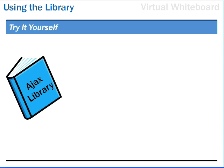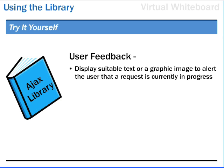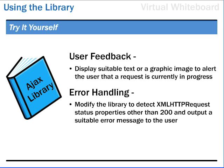The current library might be improved in a number of ways. This will be left as an exercise for the reader, though in many cases the techniques have been covered elsewhere in this program. User feedback, for example, has not been addressed. We previously discussed how the display of suitable text or a graphic image can alert the user that a request is currently in progress. It would be useful to revise the library to include the techniques discussed in Lesson 13 and elsewhere. Error handling has been excluded from the code and would provide a useful addition. For example, it should not be too difficult to modify the library to detect XMLHttpRequest status properties other than 200 and output a suitable error message to the user. Feel free to experiment with the code and see what you can achieve.